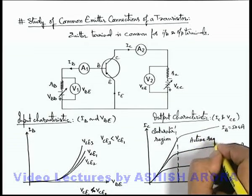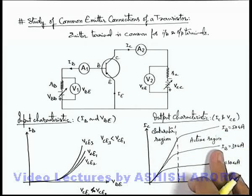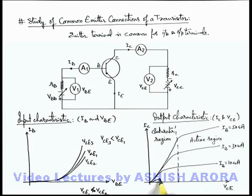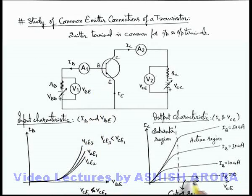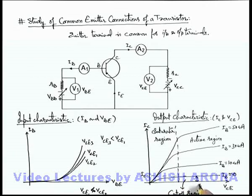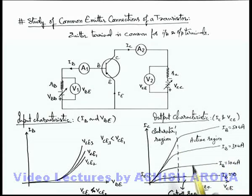In most cases, the transistor is operated in the active region. If we talk about the small zone when IB is approximately zero, this is the region we call the cut-off region, in which both junctions are reverse biased and a very small current flows. For the collector current, this very small current is termed as ICEO. We will discuss this in detail when we talk about the three operating regions of a transistor in the common emitter configuration in the next section.